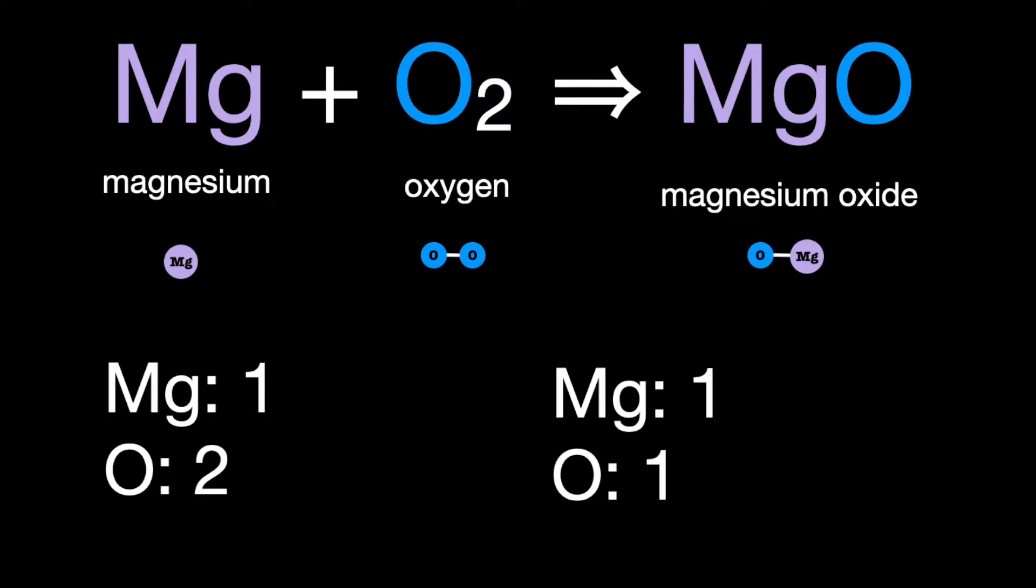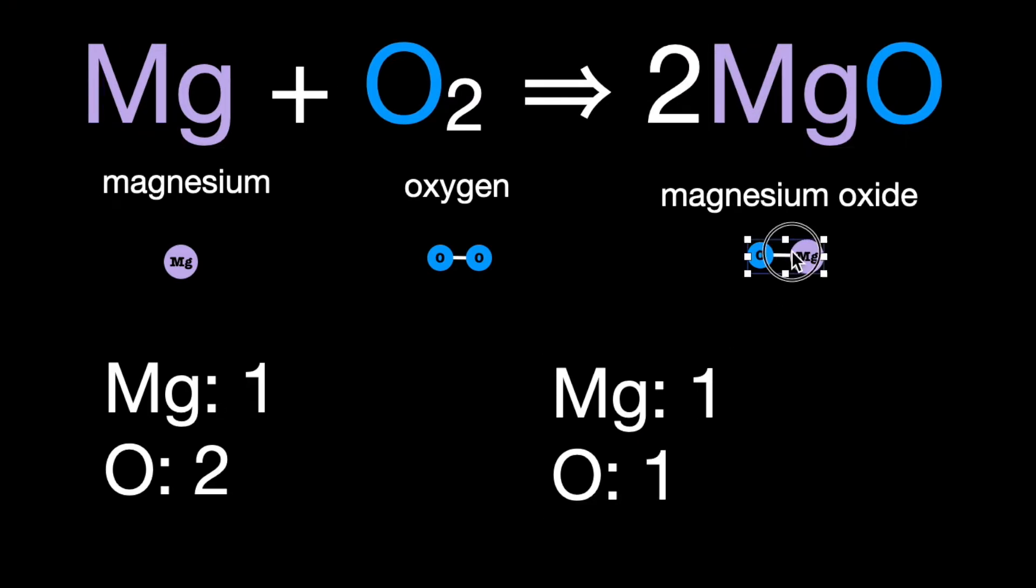So what now can we do to balance out these numbers? Because we can see we have two oxygen going in and one coming out. Well, we could double the amount we have on this side. We could double the amount visually too. Let's double those molecules.